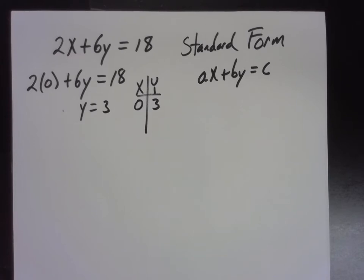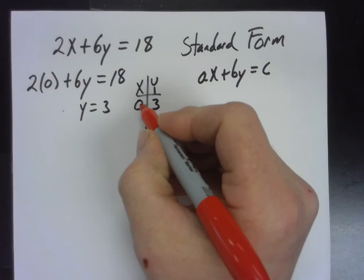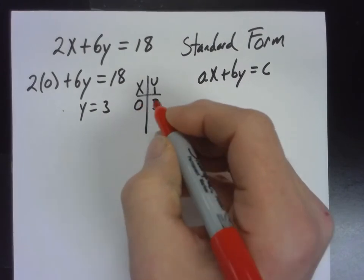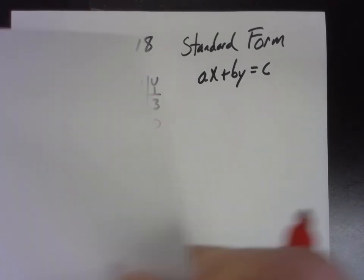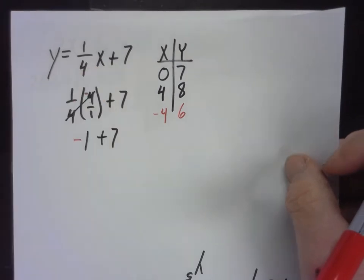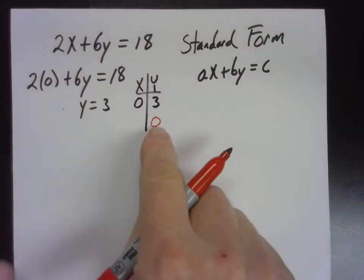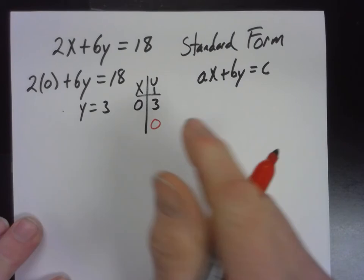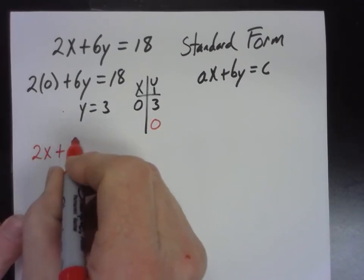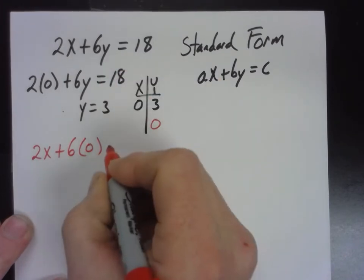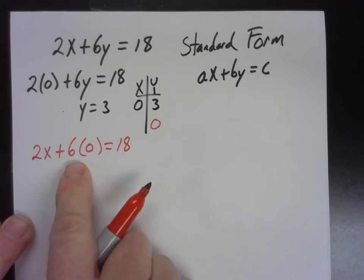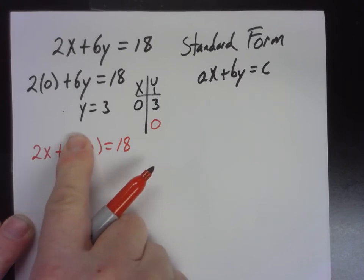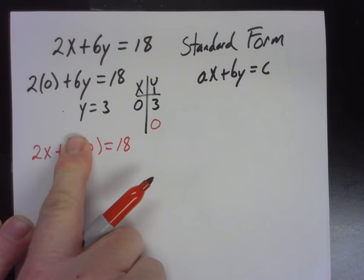How can we find that other point? Well, not only can we put a zero in where X is, guess what else we can do? We can put a zero where Y is. Now, we don't do that when it's in this form. We always put numbers in for X and get numbers out for Y. But we can. So, we can go two times X plus six times Y. We're going to put a zero in there. And what happens again? What happens to this term? It disappears. It doesn't matter anymore, does it? It's zero. So, two X equals 18. What does X equal? Nine.